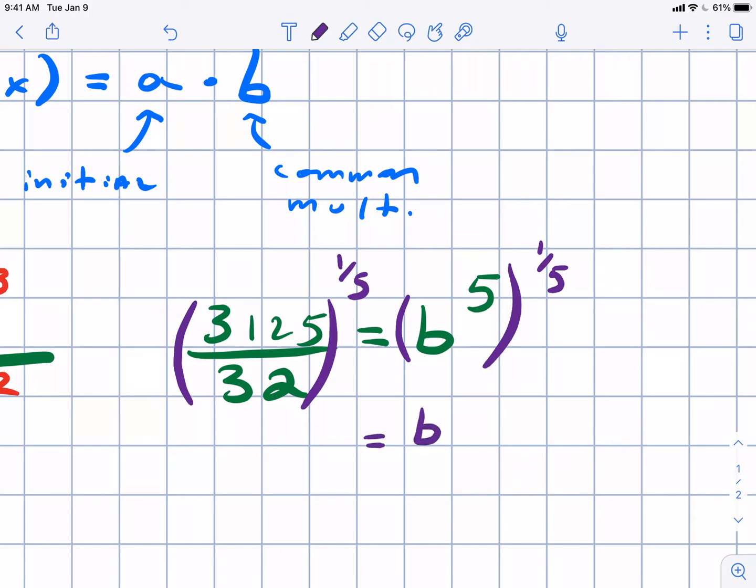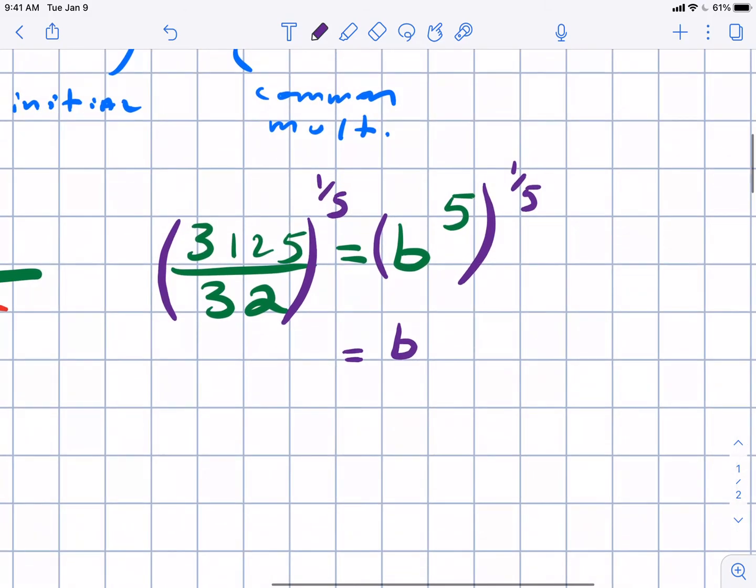So in this case, if it's to the fifth, you would raise it to the one-fifth. Think about why this works: our exponent rule for when we raise a power to a secondary power is to multiply, so five times one-fifth is just going to give us b to the first. And this is a little bit easier to type on the calculator as well.